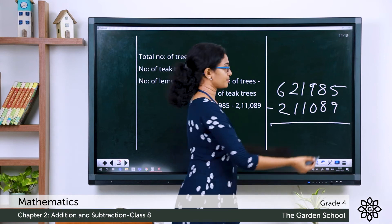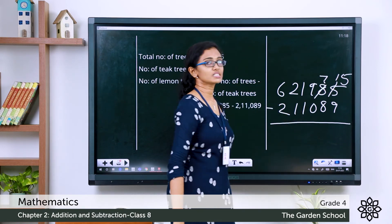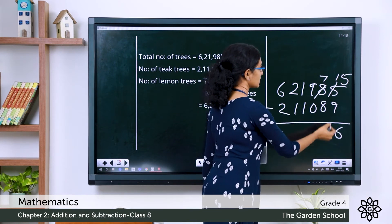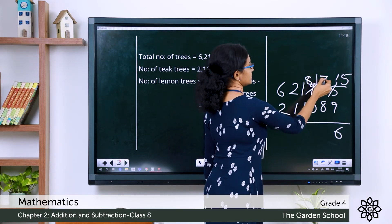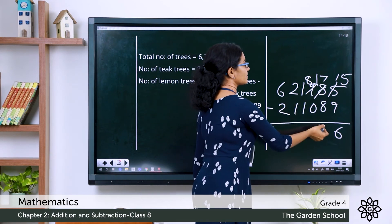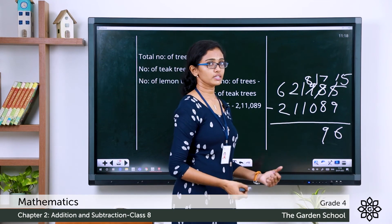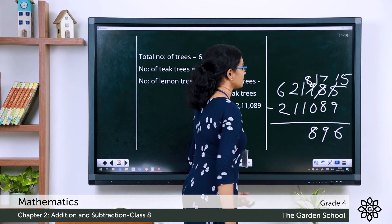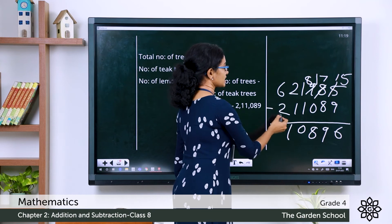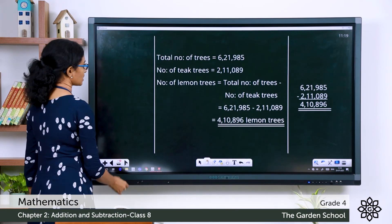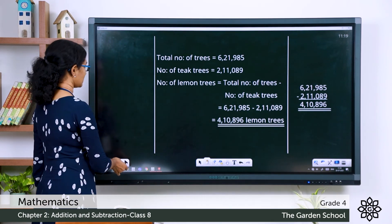We cannot do 5 minus 9, so we borrow one from the tens place. This is changed to 15 ones and the tens to 7. 15 minus 9 gives 6. Now 7 minus 8 we cannot do, so we borrow again. This becomes 8 and 17. 17 minus 8 gives 9. Now 8 minus 0 — any number minus 0 is the number itself, so it is 8. Then 1 minus 1 is 0. 2 minus 1 is 1. 6 minus 2 is 4. The number of lemon trees in the park is 4,10,896.